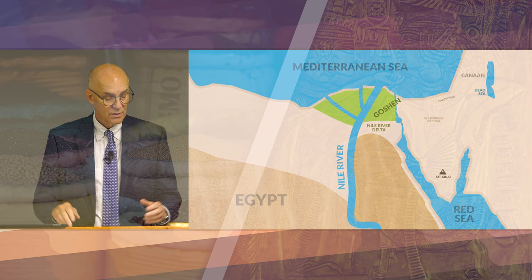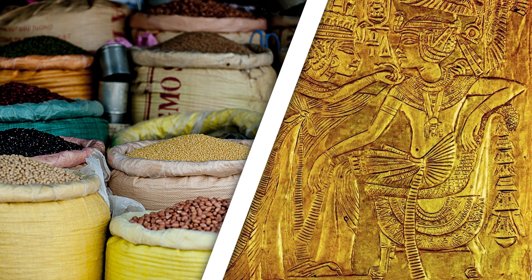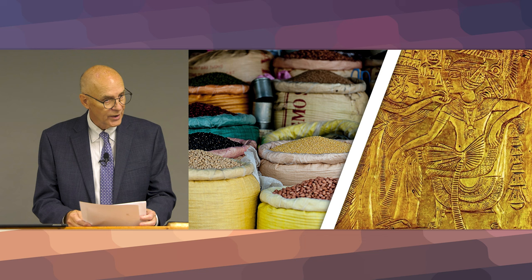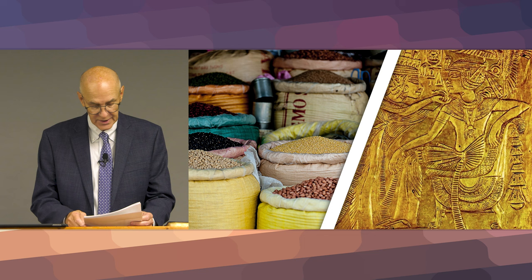They also had an abundance of gold and precious stones, which showed up in the beautiful artworks they produced that are available to be seen in various museums even to this day. They also were great producers of food, and that's behind the story of Joseph when he is in Egypt.